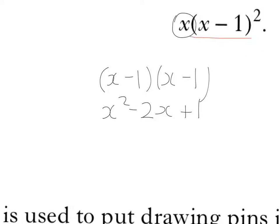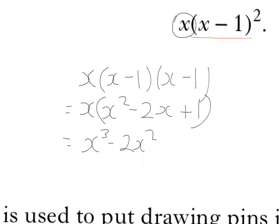But that's all getting multiplied by x. So x times x squared is x cubed, x times minus 2x is minus 2x squared, x times 1 is x, and that's the final answer.